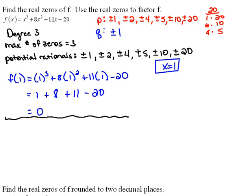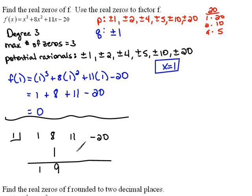Synthetic division is where you take and use only your coefficients. So that would be 1, 8, 11, and negative 20. And we're going to divide by that zero of 1. So remember, we drop our first term and multiply diagonally and add down. Multiply diagonally and add down. Multiply diagonally and add down.